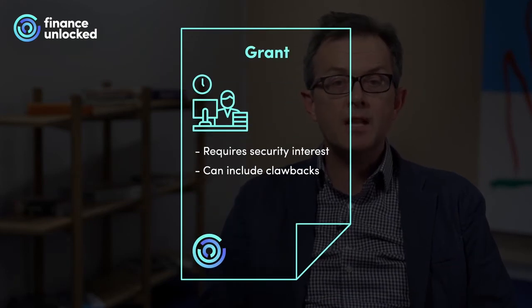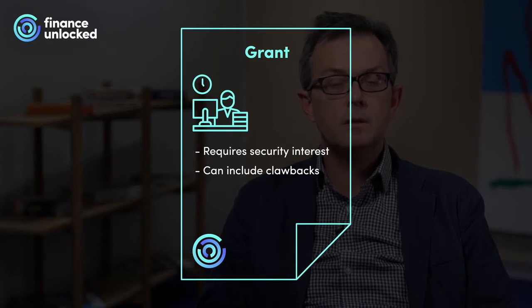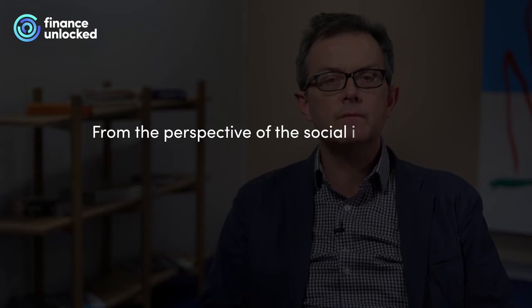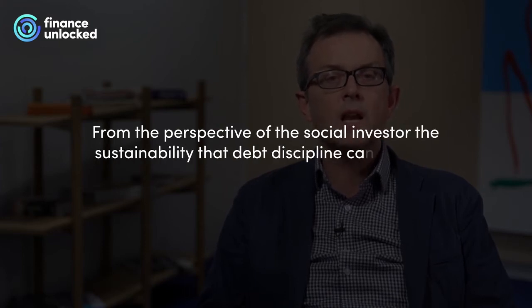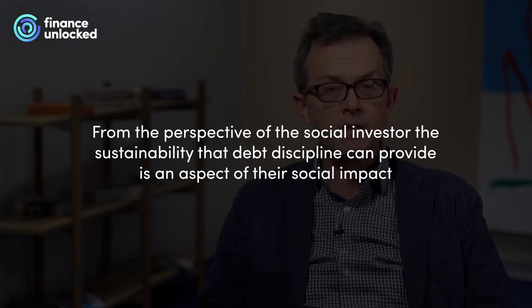For example, if grants are financing an asset purchase like a property, they will often have a security interest. Equally, there can be clawbacks such that the grant must be repaid if the associated service is not adequately delivered. This would tend to include failure to deliver through insolvency. Hence, grant providers will frequently occupy a seat at the senior creditors' table in administration proceedings. From the perspective of the social investor, the sustainability that debt discipline can provide is an aspect of their social impact. This aspect can appeal to philanthropists as funders of social investment funds.